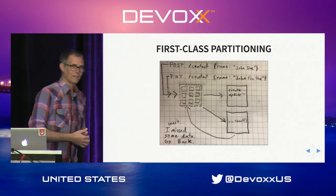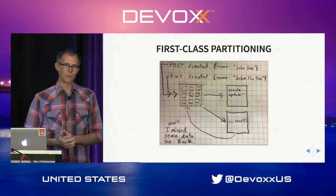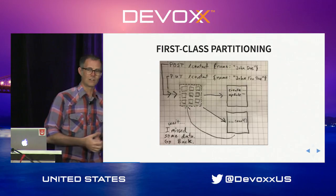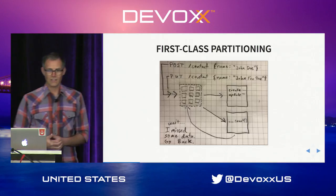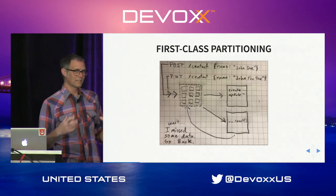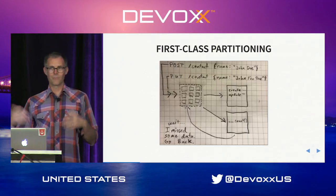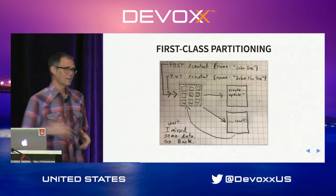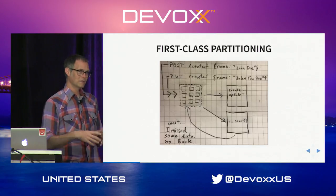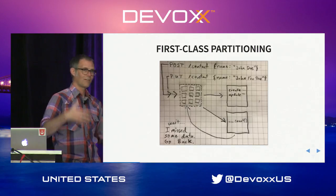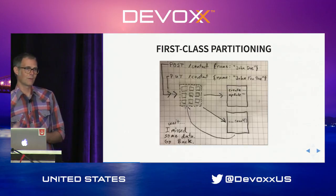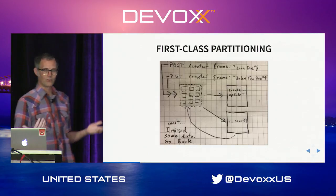The third way we address integration problems is that the thing really needs to be distributed from the outset. It can't be something we scale by adding faster hardware — it has to be something we scale horizontally.